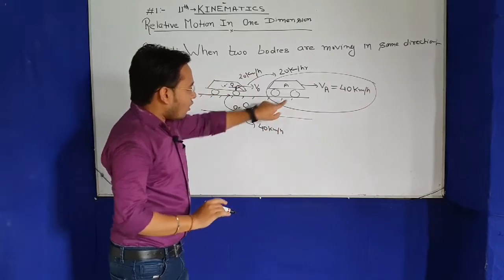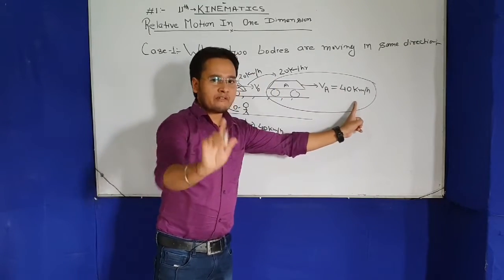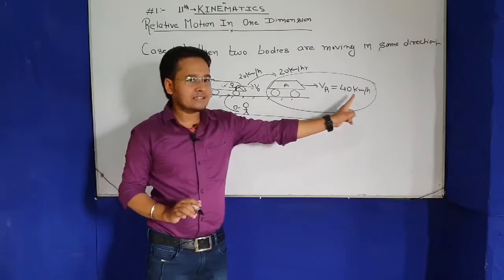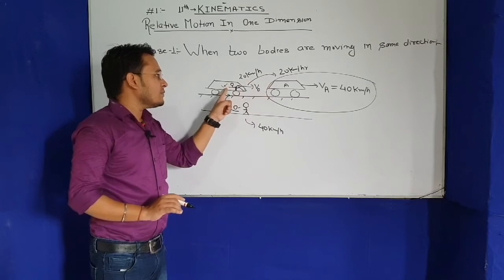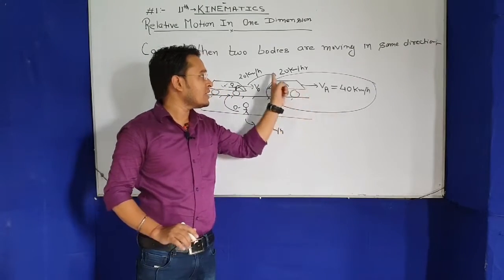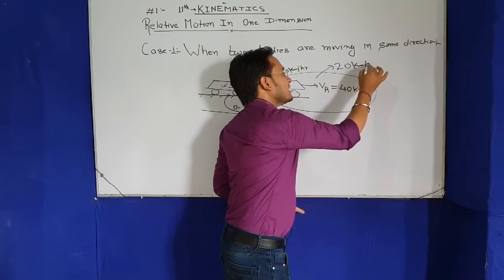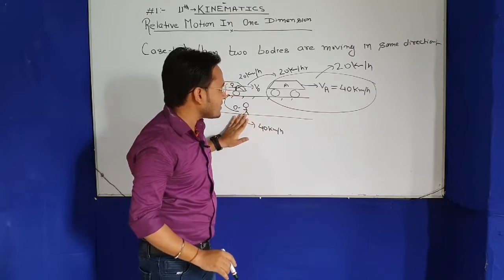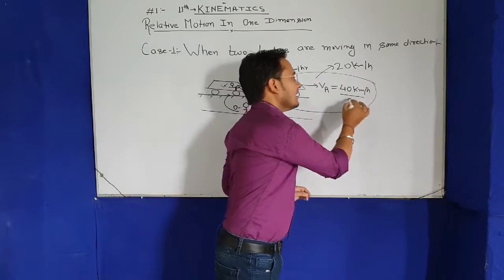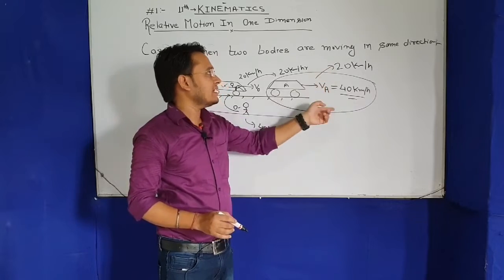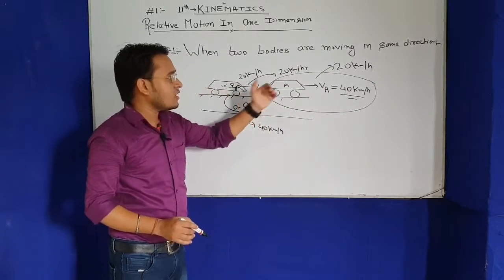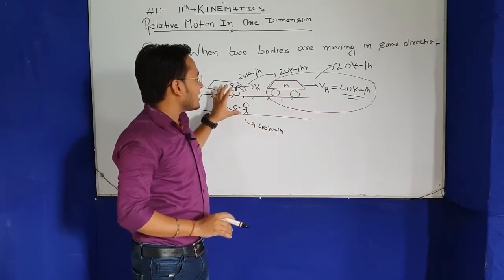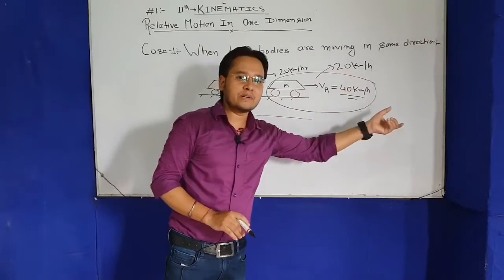So basically this is called relative motion. The object was the same — it was actually moving at 40 km per hour. But the same observer, when standing by the roadside, saw it at 40, and when sitting in another car moving behind it, saw it at 20. This variation in speed with respect to the observer's frame is what we call relative speed or relative velocity — meaning the velocity of an object depends on which frame we are observing it from.